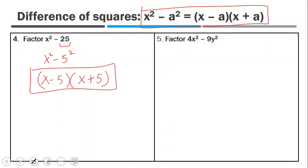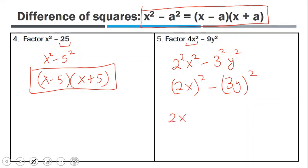And for number 5, we can see 4x raised to the power of 2, so that would be 2 raised to the power of 2, x raised to the power of 2, minus 3 raised to the power of 2, y raised to the power of 2. So now I have 2x, everything raised to the power of 2, minus 3y, everything raised to the power of 2. So this is again the difference of squares. So I have 2x minus 3y multiplied by 2x plus 3y.